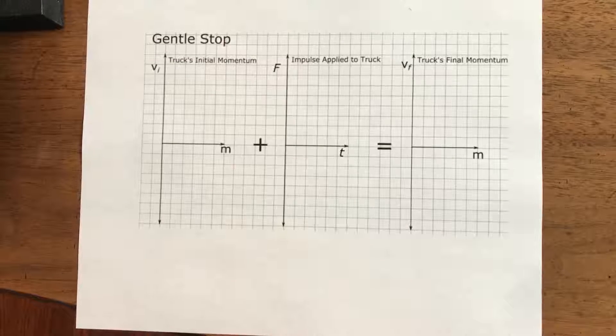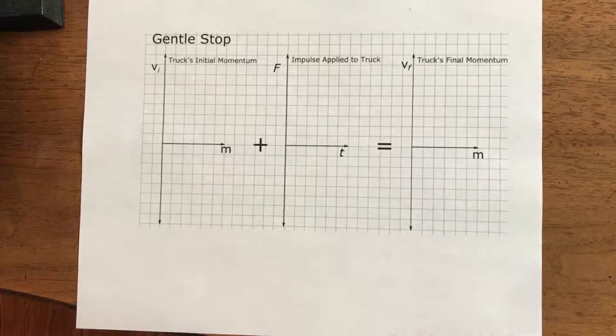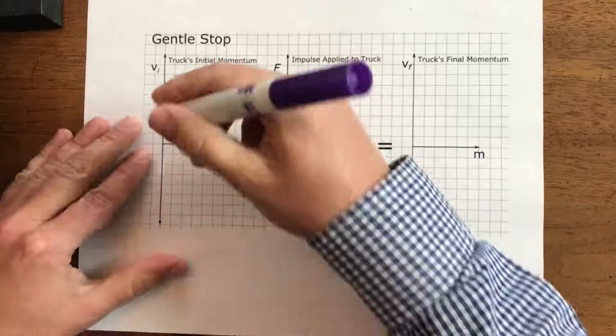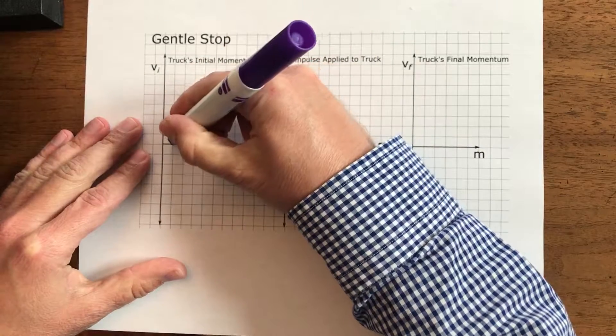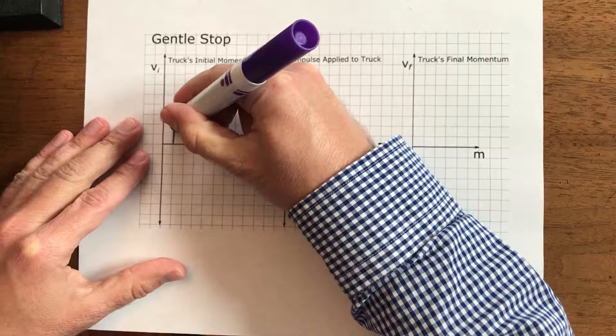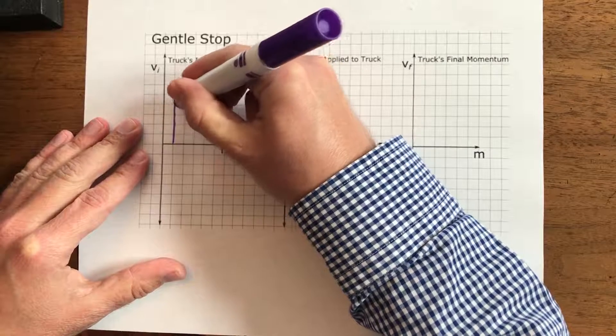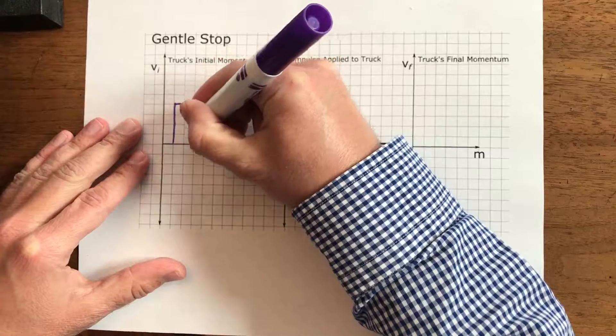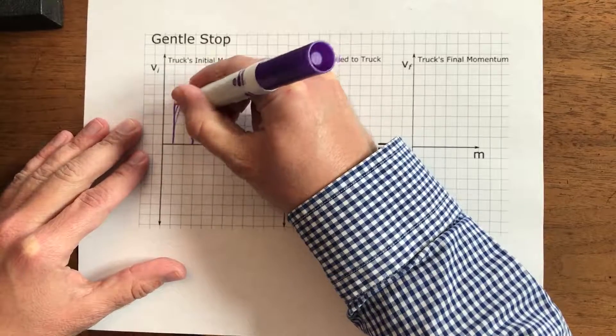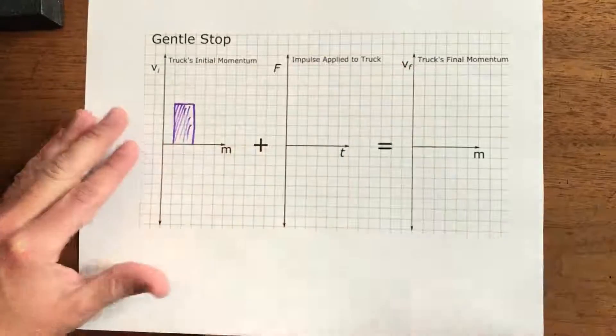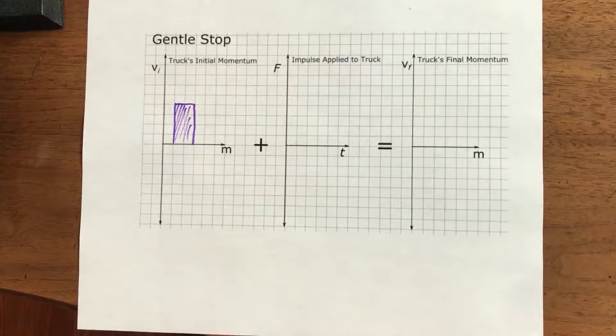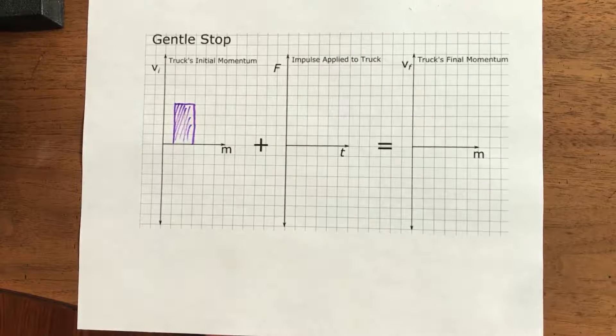We've got this truck that's got some initial amount of momentum and they don't tell us how much momentum, so I'm just gonna make it up here. I'm gonna shade in one, two, three, four boxes tall, two boxes wide, so some amount of momentum right there. I've got eight squares colored in there to signify that momentum.